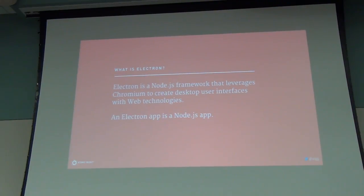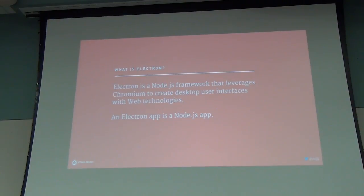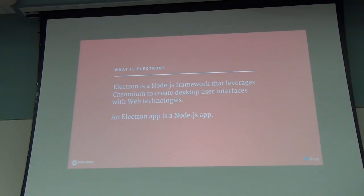One of the really important things to understand is an Electron app is a Node.js app — that means it is JavaScript all the way down, from your web interface all the way to the code running headless in there. It's not a thin wrapper around Chrome. It's actually more like Node implemented into a Chrome browser, which gives it more capabilities than you would get inside a normal browser.